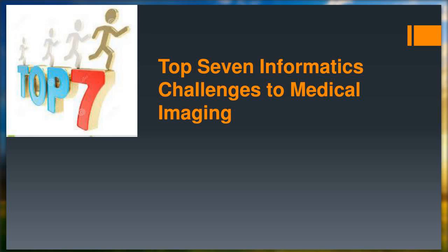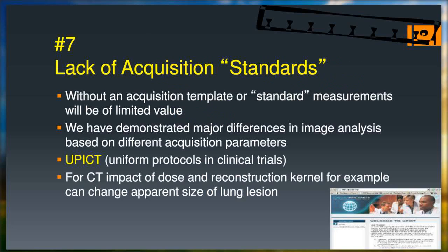I'd like to briefly go over the top seven informatics challenges to medical imaging, based on work I did within the National Cancer Institute at the NIH. One challenge is lack of acquisition standards. If Mr. Akamai got his CT scan on one particular scanner, how likely is it that the nodule would appear the same size and shape on other scanners? One important thing is creating uniform protocols for acquisition — whether it's PET, MR, ultrasound, or CT. There is a protocol called UPIC — Uniform Protocols in Clinical Trials — used for clinical trials, and I strongly believe they should be utilized for routine clinical care such as chest CT screening.